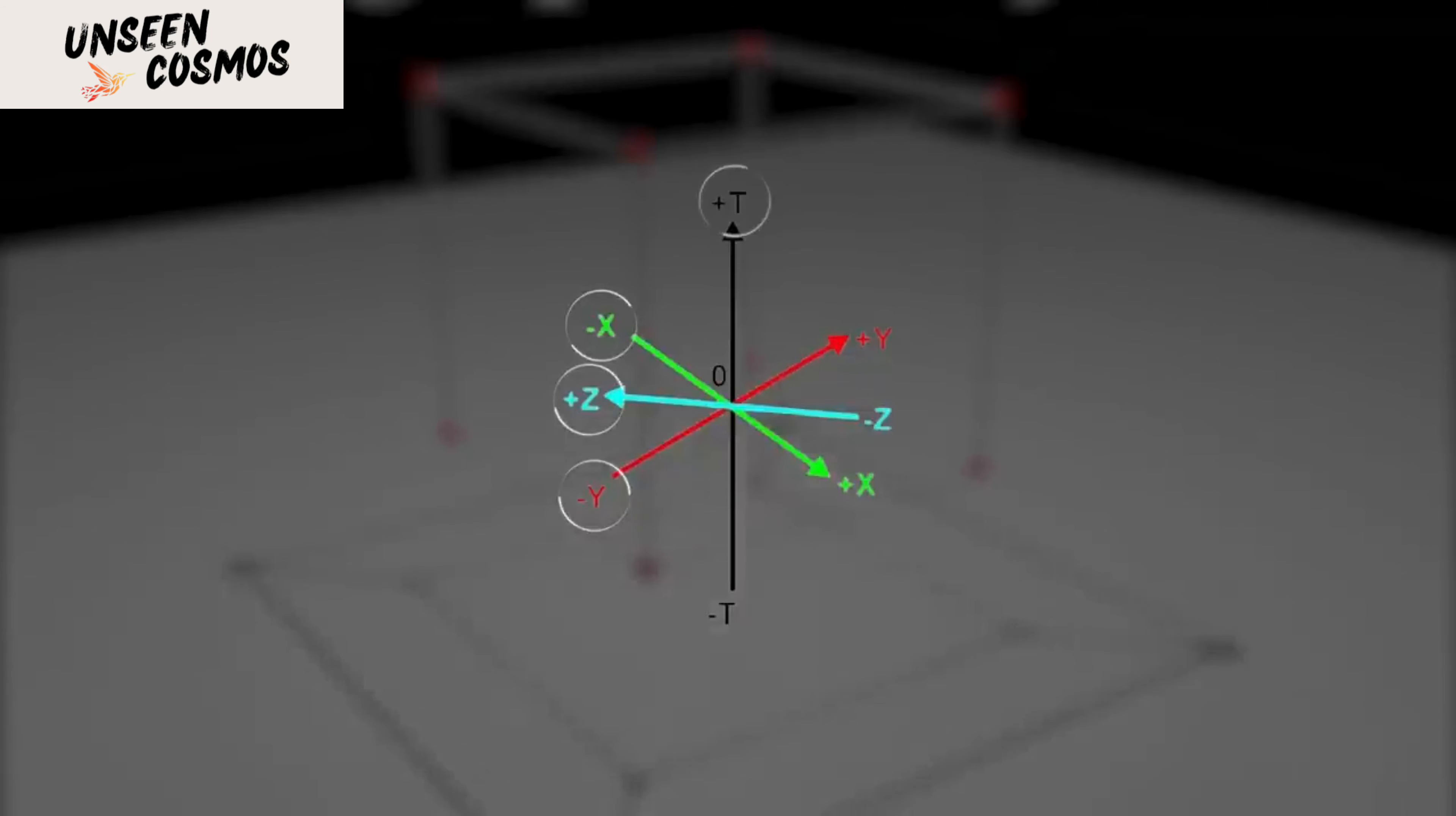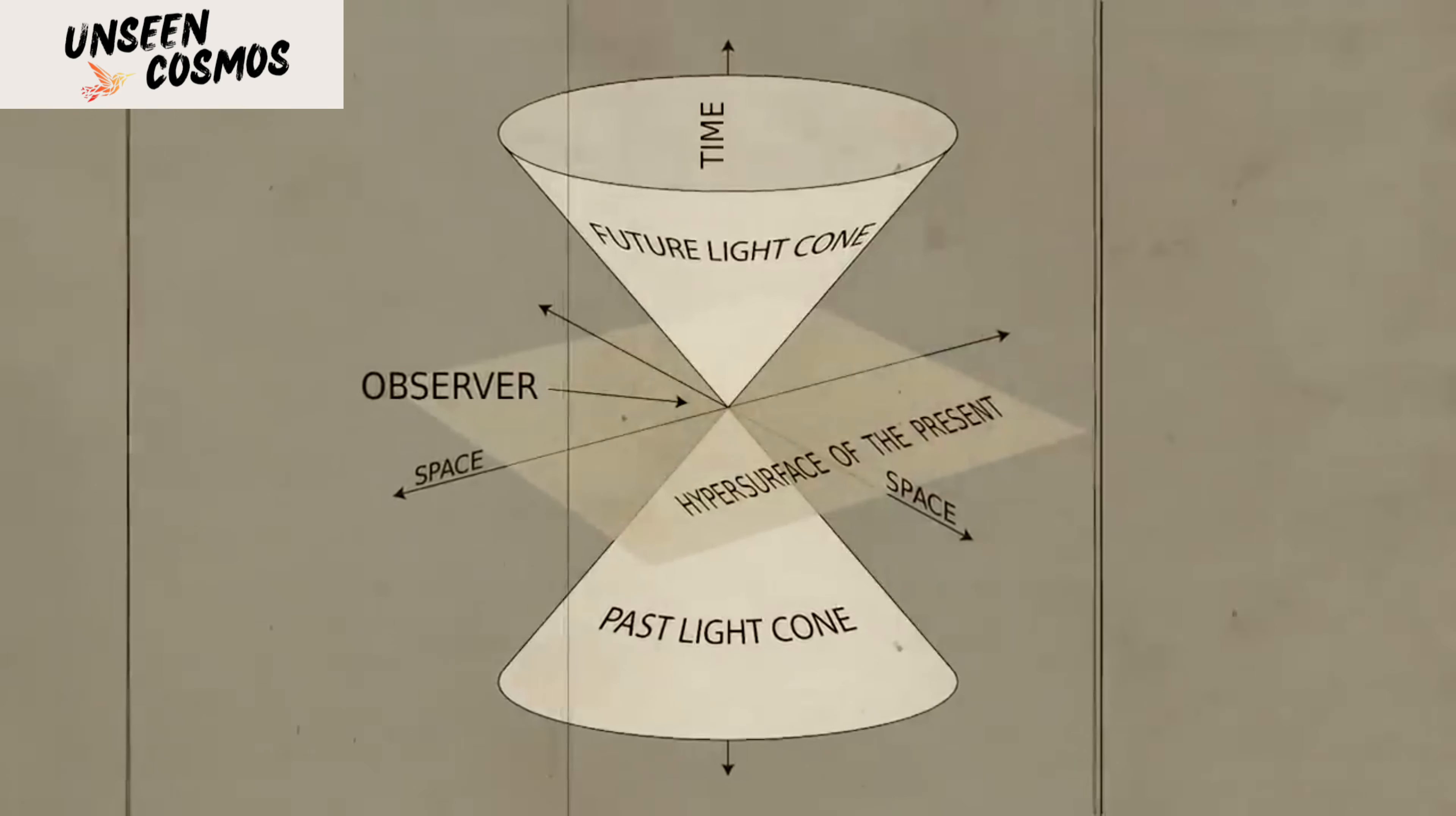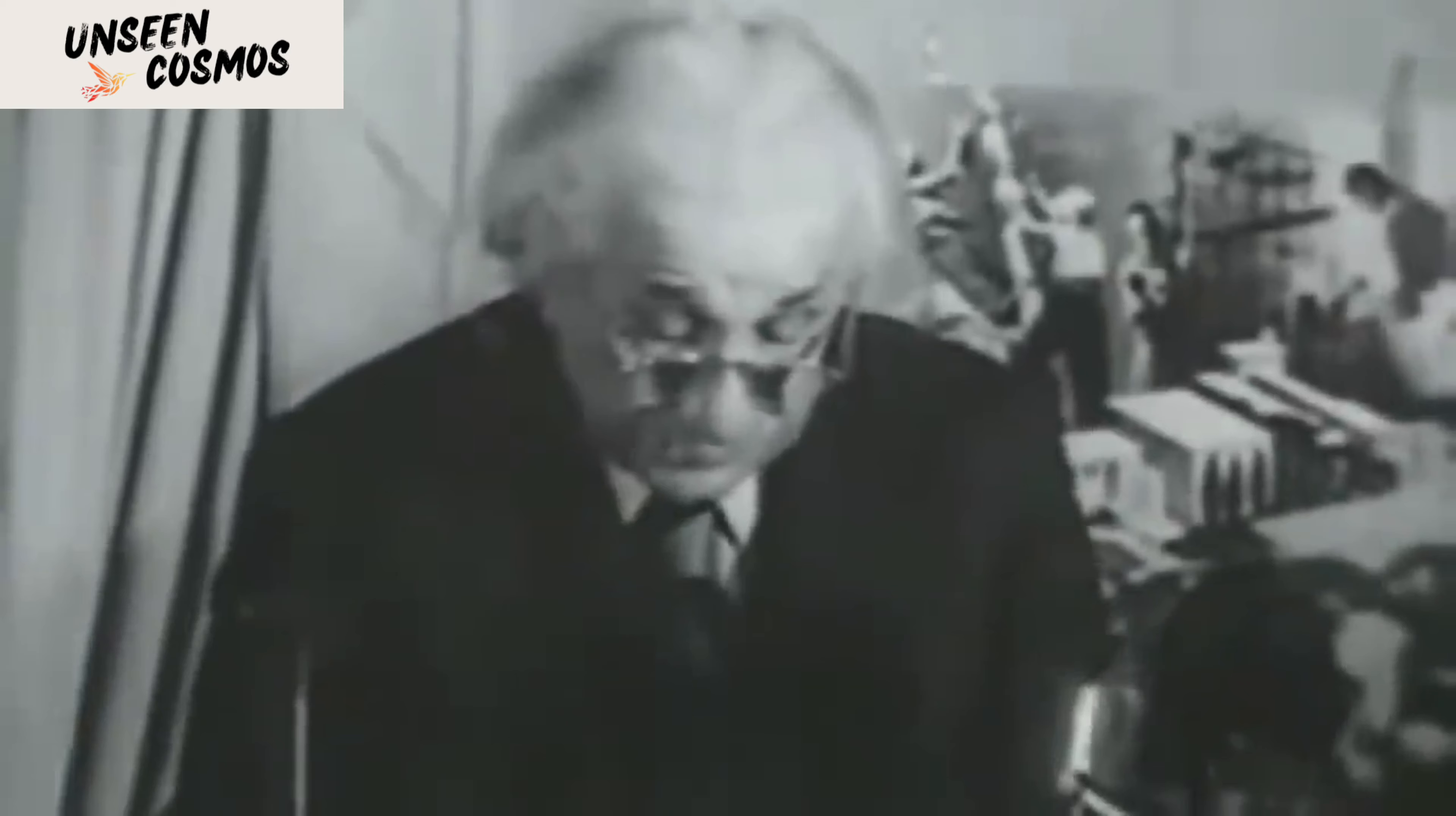One intriguing avenue of research in space-time modification is the development of space-time coding digital metasurfaces. These metasurfaces have the potential to manipulate electromagnetic waves by encoding information in both the space and time dimensions. They can enable complex wave manipulation, such as beam steering, shaping, and scattering signature control. Digital metasurfaces are composed of sub-wavelength metallic patches printed on a grounded dielectric substrate. By controlling these patches digitally, researchers can generate variable phase and amplitude distributions on the surface, altering the reflected wave fronts. These metasurfaces have shown promising applications in wireless communications, cognitive radars, adaptive beam forming, and holographic imaging.